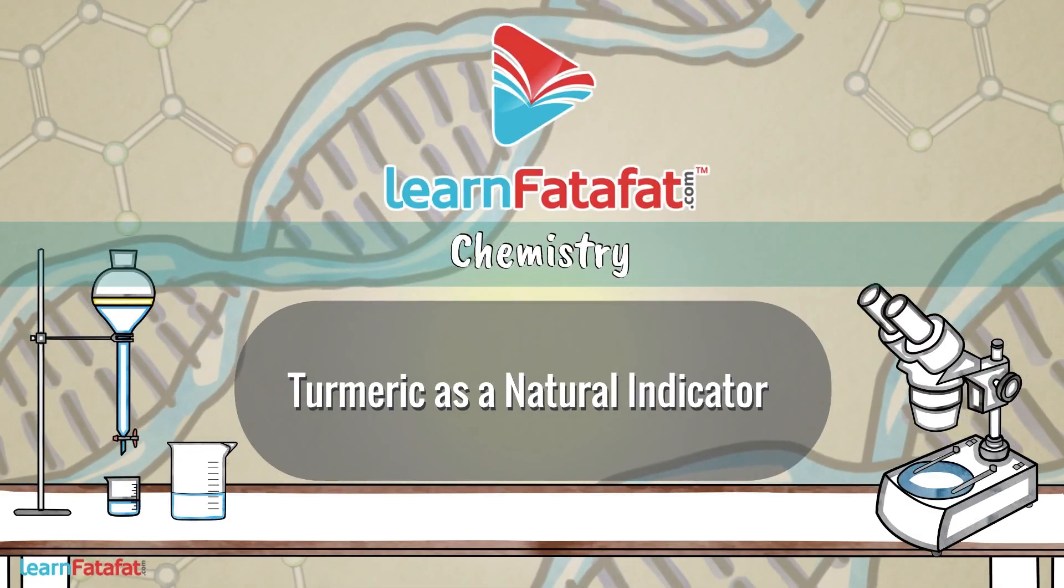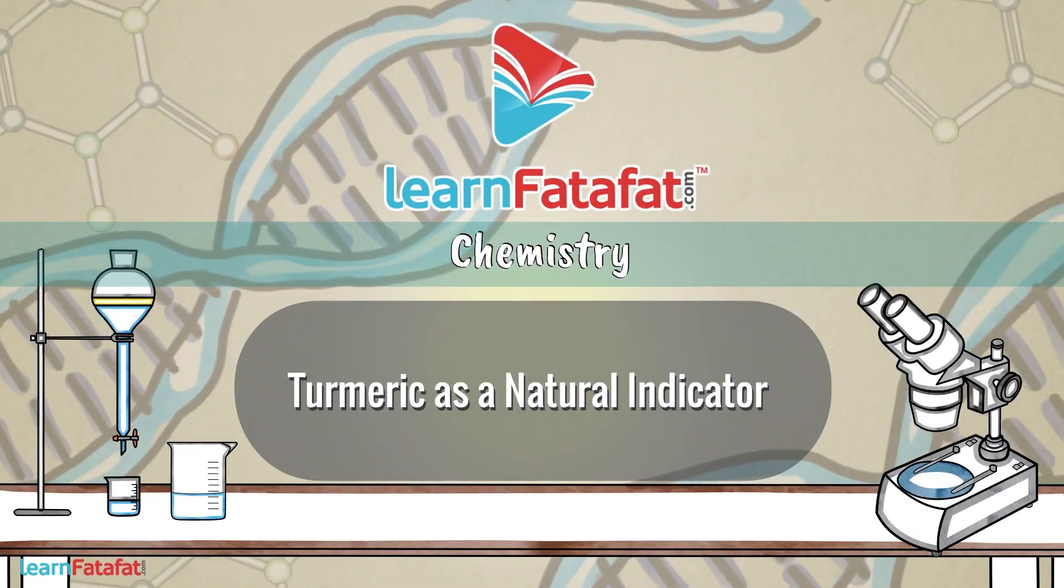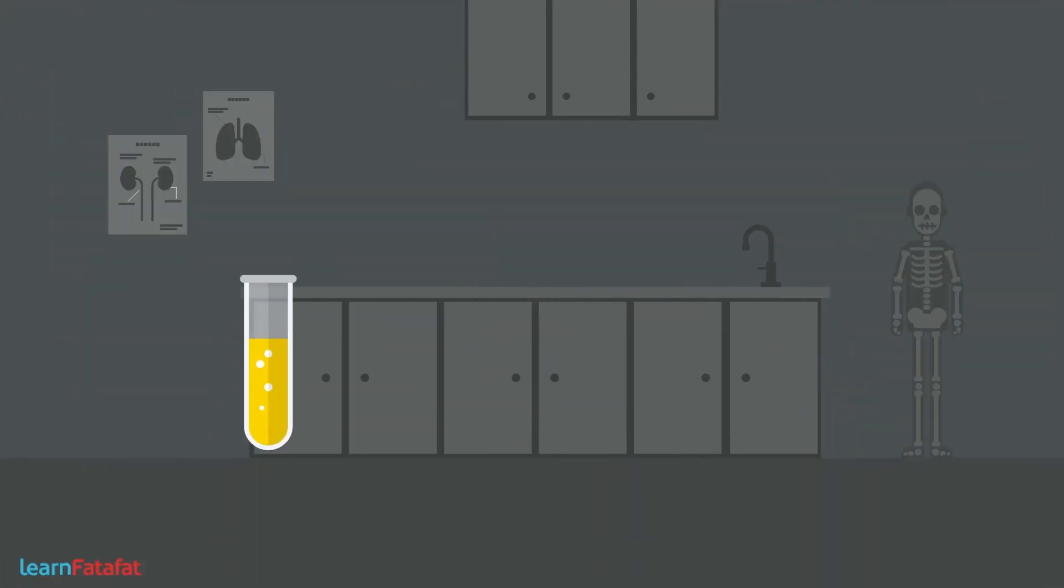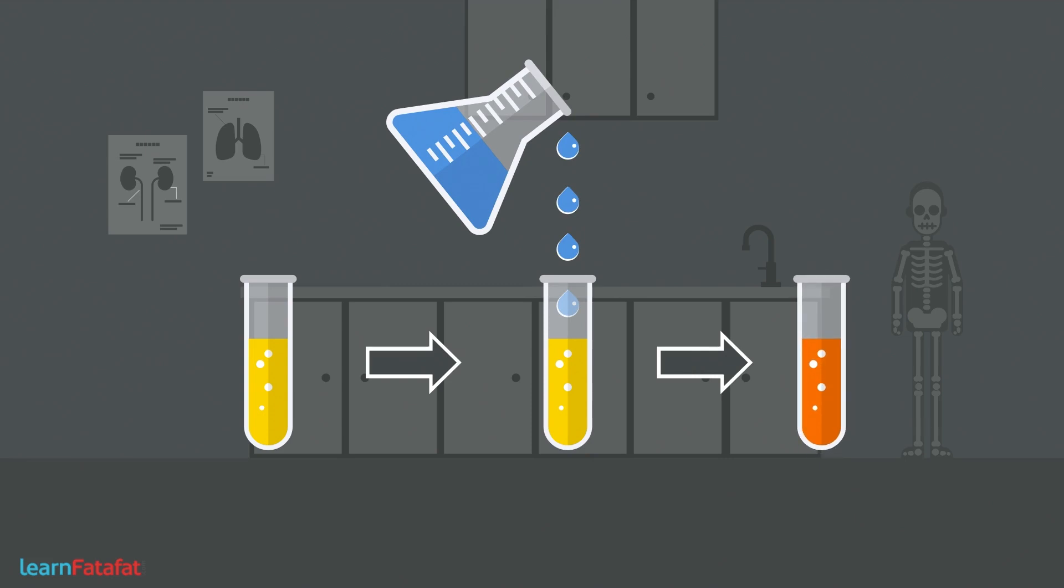There are certain substances which on mixing with other substances cause a change in their color. Such substances are called indicators.